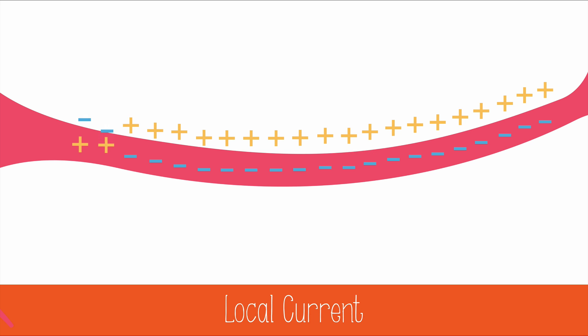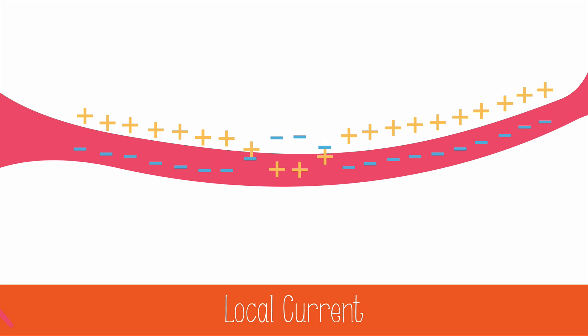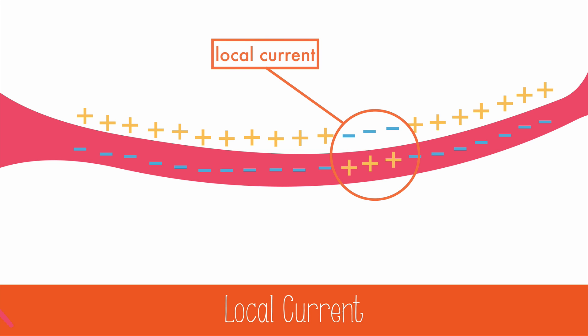This wave-like region where the action potentials are flowing is referred to as the local current. The flow of sodium through one gate will trigger the flow of sodium in the next gate, but sometimes there isn't enough sodium to trigger an action potential.